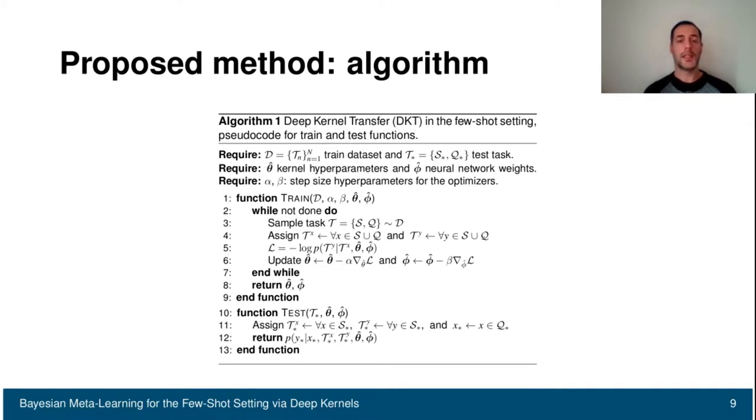In the test function, we are taking as input a new task t star and the set of parameters that we have learned before. And what we return is just the predictive distribution over the new data point.